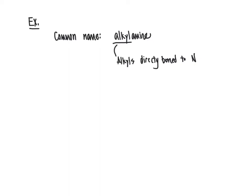Let's take a look at a specific example here. I'm going to use a secondary amine. For this secondary amine, we have bonded to the nitrogen both a propyl group and a methyl group.